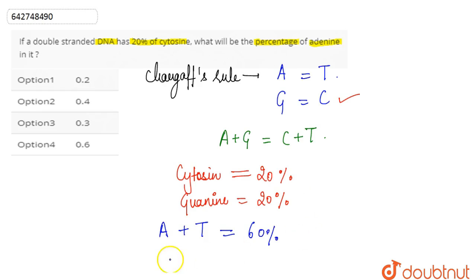Therefore, the percentage of adenine will be equal to 60 divided by 2, because A is equal to T. So the percent of adenine will be 30, and if we convert it, 30 divided by 100 is 0.3. As per the question, our correct answer is option 3, that's 0.3.